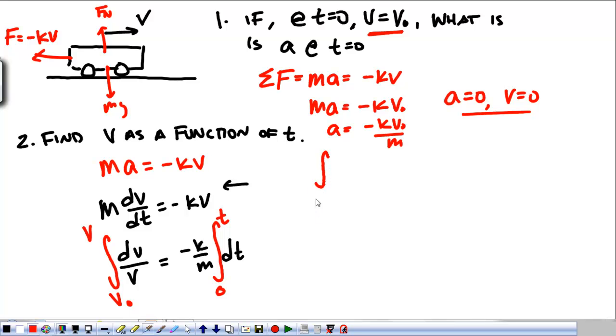We're just moving up here. We have the integral from V0 to V of dV over V, and that's equal to negative K over M times the integral of dt from 0 to some later time t.